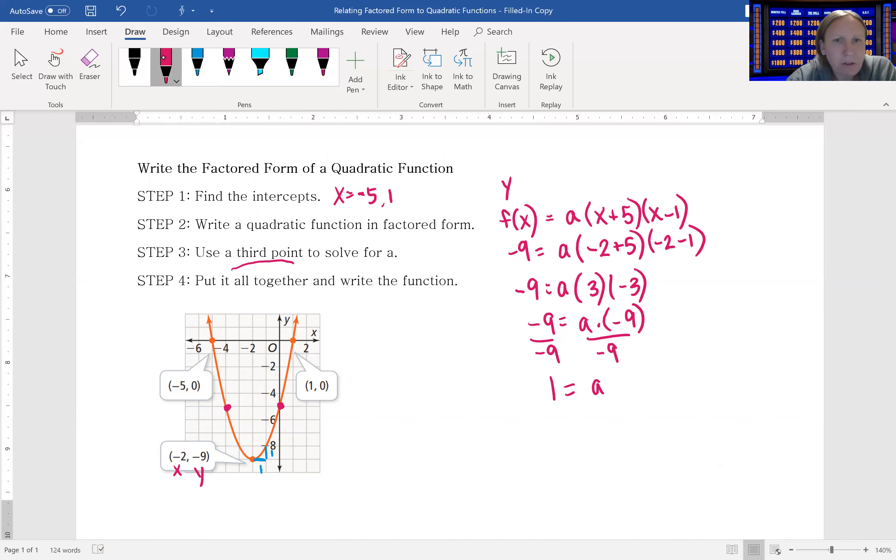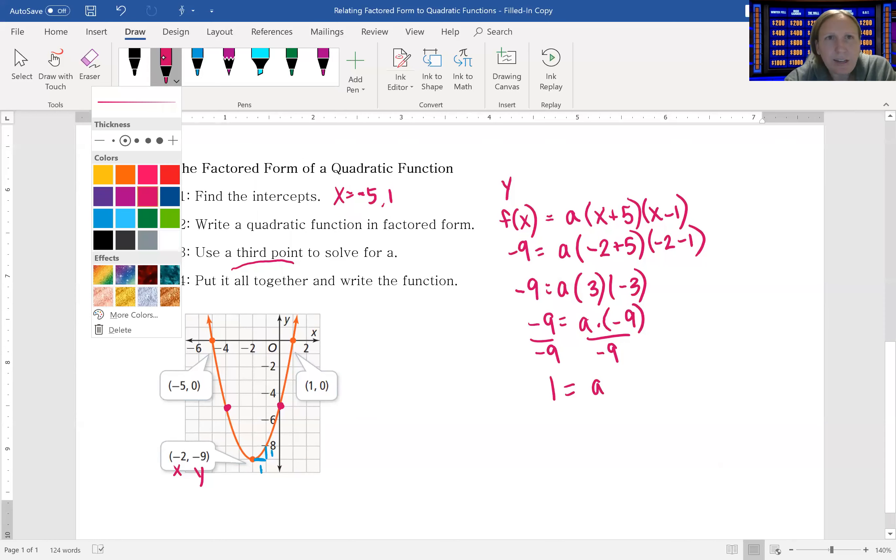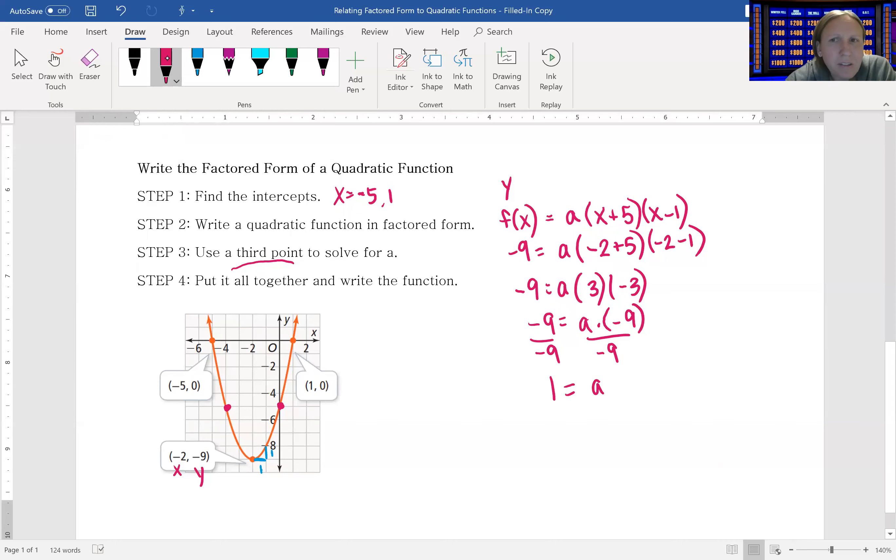But if you can't tell from the graph, then you can always just plug things in and find that missing a. So final answer, it's going to be f(x) equals, a is 1, so to me it doesn't make sense to write the 1. So I'm going to say (x + 5)(x - 1). And that is our function.